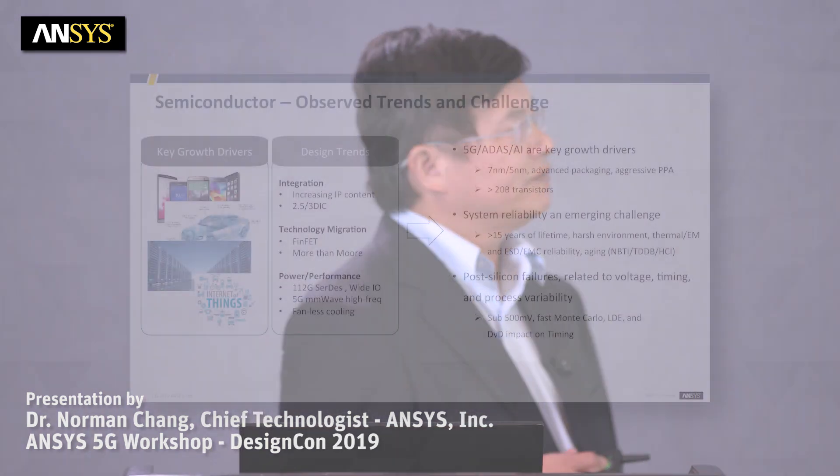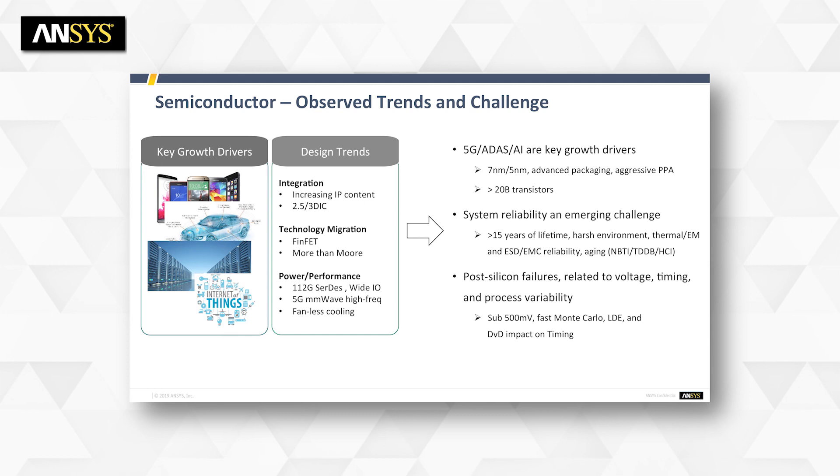The new issue for 5G systems is system reliability. The 5G systems, including the AI system in ADAS and the V2X system, have a reliability requirement of more than 15 years and will operate under harsh environments. Reliability issues I'll discuss today include thermal, ESD, EMI, EMS, and aging — all key for the long-term operation of the chip.